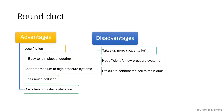Even though round duct is preferable, we don't have a choice and sometimes have to use rectangular duct. It depends on the distance between the ceiling and the false ceiling. If the project is high class with lot of space you can use square or round duct, but when space is restricted we have to use rectangular duct.